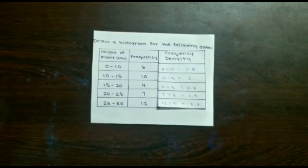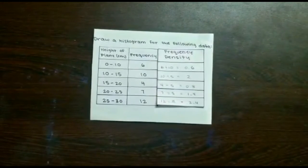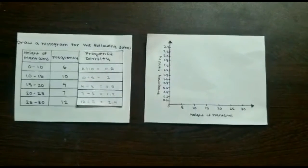Since frequency density is the frequency over the group width, we can calculate it for all of the groups by dividing the frequency by group width. So for the first one, 6 over 10 is 0.6, and we can continue it for the rest.